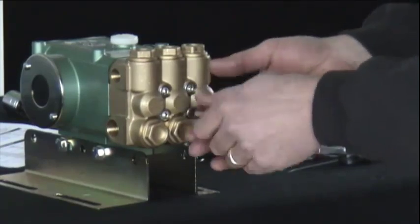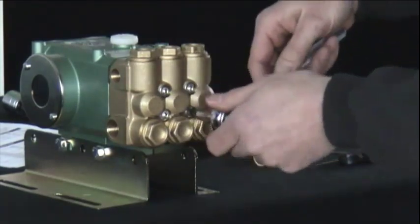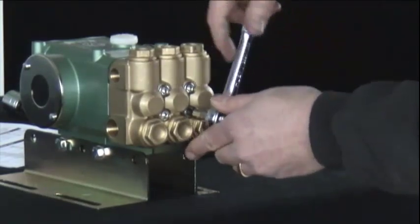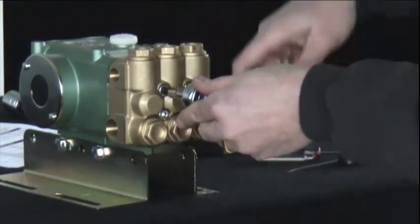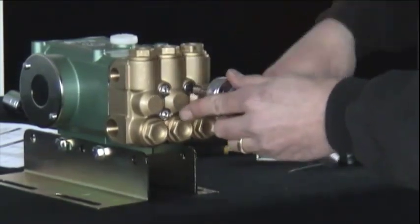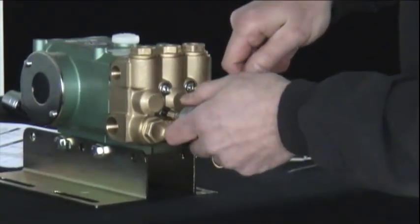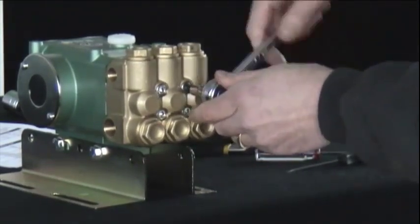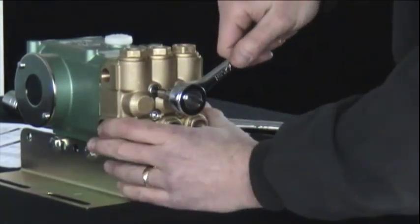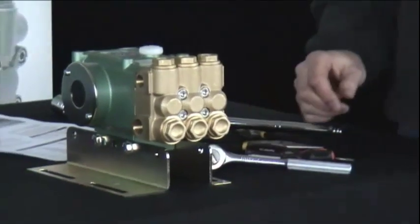After I snug these up, we'll take our ratchet, insert the socket. And we'll tighten, tighten these bolts in a cross pattern, tighten and re-torque to approximately 20 foot-pounds. And that completes the seal service of the pump.